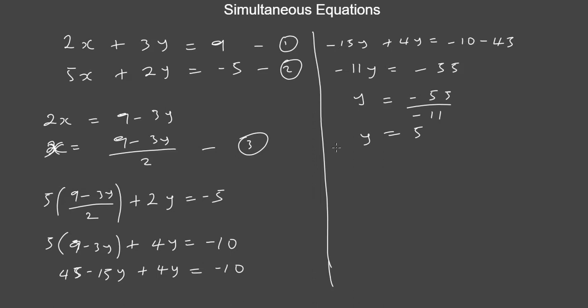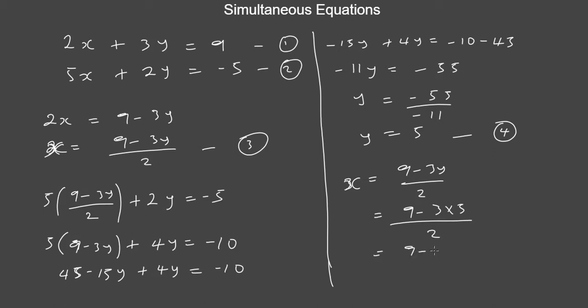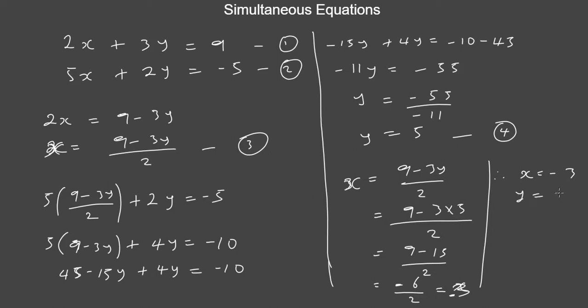Now that we have y, we substitute y as 5 into equation 3 to find x. Taking x equals 9 minus 3 times 5 divided by 2, that gives 9 minus 15 divided by 2, which is minus 6 divided by 2, so x equals minus 3. Therefore x equals minus 3 and y equals 5.